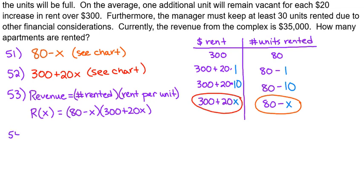Problem 54 asks us to use the information given earlier, where it says the revenue is $35,000, and plug that in.